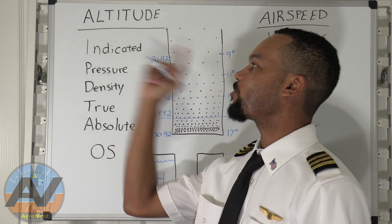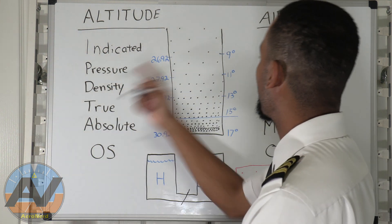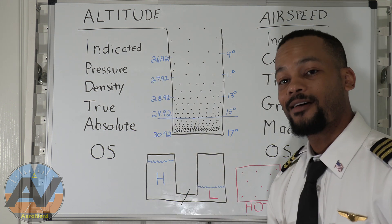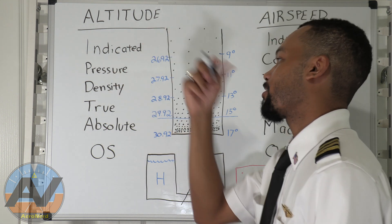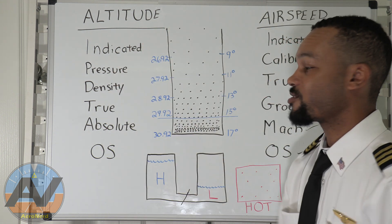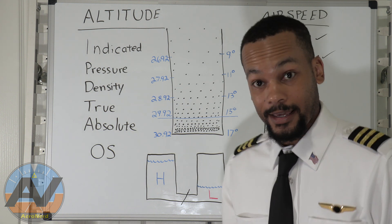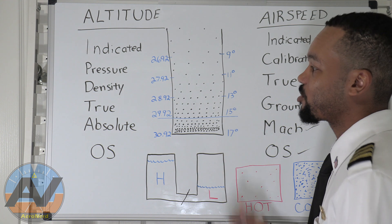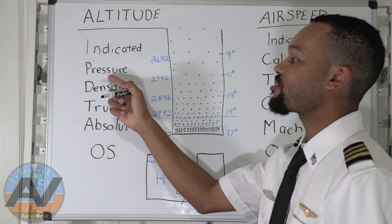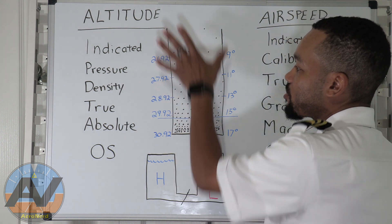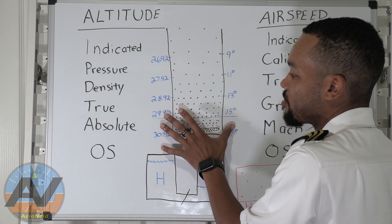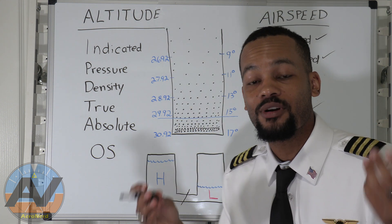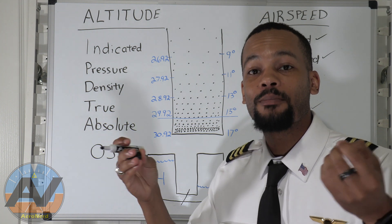Moving along to altitude. Just like we have indicated airspeed, we also have indicated altitude — that is exactly what your altimeter is indicating. Now we have pressure altitude. Pressure altitude is the altitude above the standard datum plane.